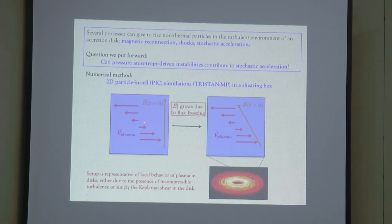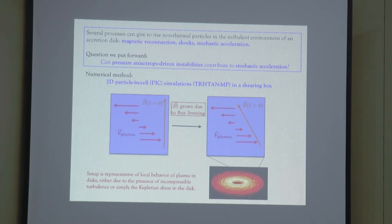We take the plasma, impose motions with the characteristic of a shear, and because of magnetic flux freezing, the magnetic field will tilt and grow in time. When that happens, we create pressure anisotropies and therefore drive the instabilities into their non-linear regime.